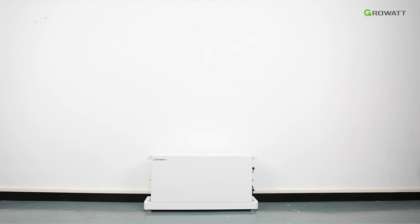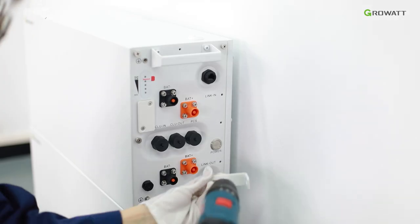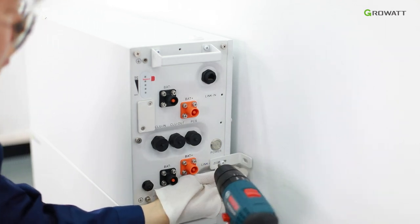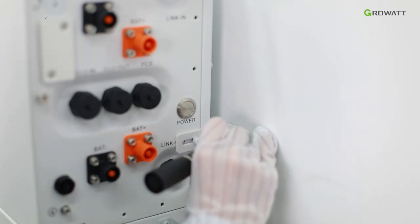Then stack the next ALP battery modules and keep the modules level. Install the anti-tipping plates on both sides and tighten the two screws. Mark the hole positions for fixing the battery.